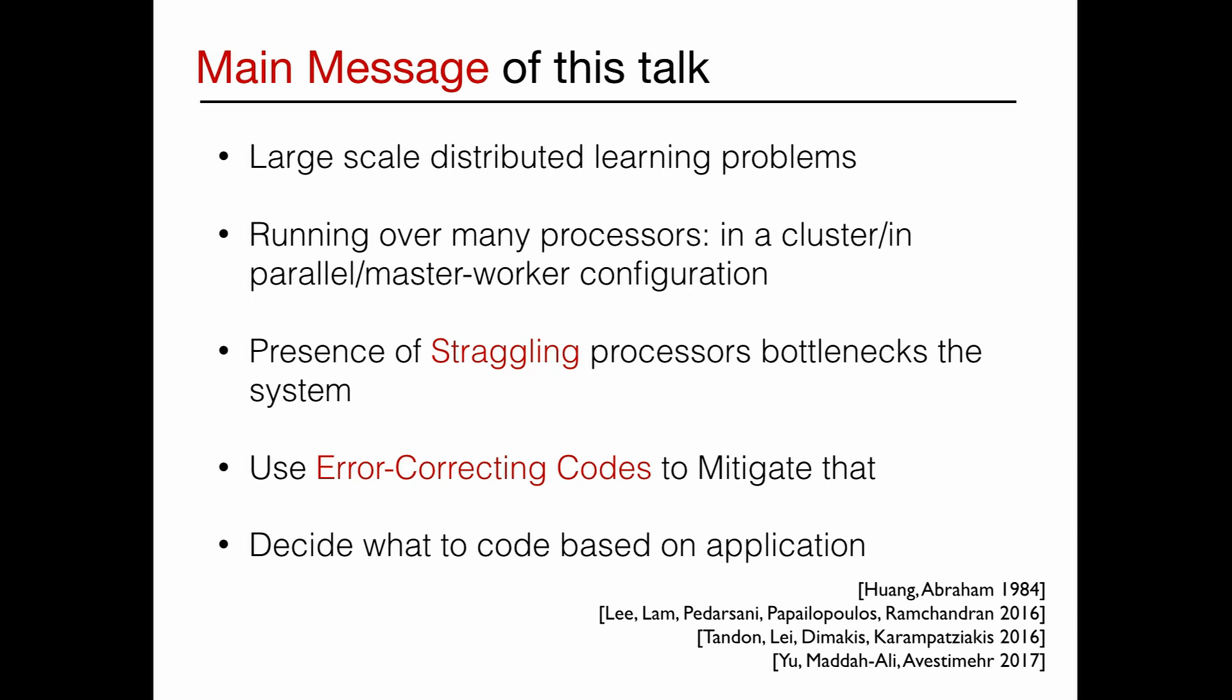It talks about large-scale distributed learning problems that run over many processors in a cluster or cloud. The gist is, if there are straggling servers or processors in the system, that becomes the bottleneck. Everything is slowed down by them. To mitigate that, you should use classic techniques of error-correcting codes. What we fit in is, you should decide what to code based on the application, and there is a systematic way to decide that. That's the main message of the talk.